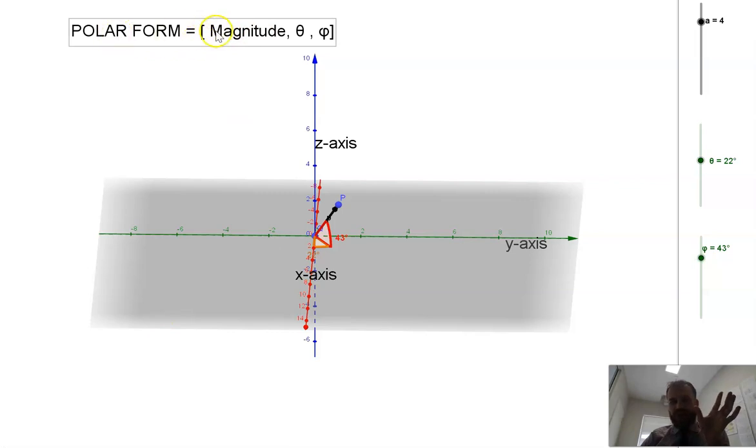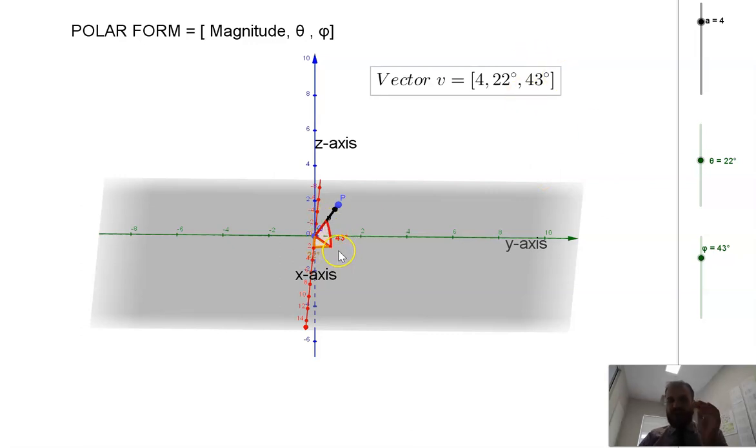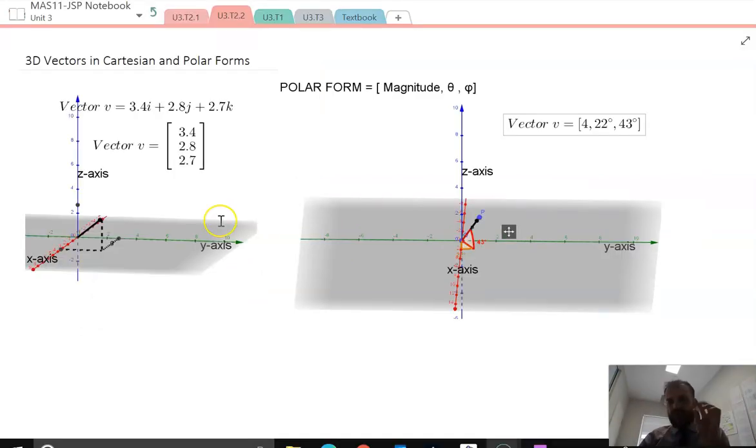So there is our quick look at three-dimensional polar form. Just to formalize it a bit, it's shown with a square bracket, the magnitude of the vector, theta, and phi, which in this case at the moment, a vector of magnitude 4, 22 degrees rotated anti-clockwise from the x-axis and 43 degrees rotated upwards from the x-y plane. Now, because you are a curious person, you'll be wondering, I've got vectors in Cartesian form here. I've got vectors in polar form here in three dimensions. How could I convert from Cartesian to polar? And how could I convert from polar to Cartesian?